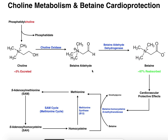Betaine aldehyde can then be converted into betaine by the enzyme betaine aldehyde dehydrogenase, which converts the aldehyde into a carboxyl group. Betaine has a nitrogen with three methyl groups on it — it's a trimethylated glycine, with a nitrogen, an alpha carbon with two hydrogens, and a carboxyl group. For that reason, betaine is sometimes called glycine betaine or trimethylglycine.